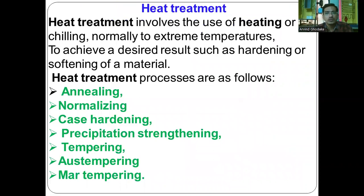Heat treatment involves the use of heating or chilling — that is, cooling — normally to extreme temperatures to achieve desired results such as hardening or softening of the material. The heat treatment processes are as follows: first is annealing heat treatment, and second is normalizing.